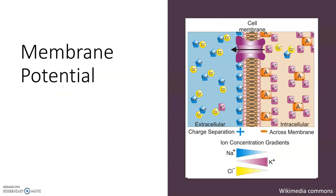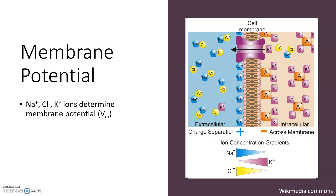As its name suggests, the membrane potential has to do with the cell membrane. Remember, the cell membrane separates the extracellular from the intracellular fluid. If we take a close look at the composition of these two compartments, we'll see that there are different concentrations of sodium, potassium, and chloride ions. There are other ions present, but these three are the most important in this context. Because there are different concentrations of these ions on both sides of the membrane, we have a gradient — what we call the electrochemical gradient, since all of these ions carry a charge.